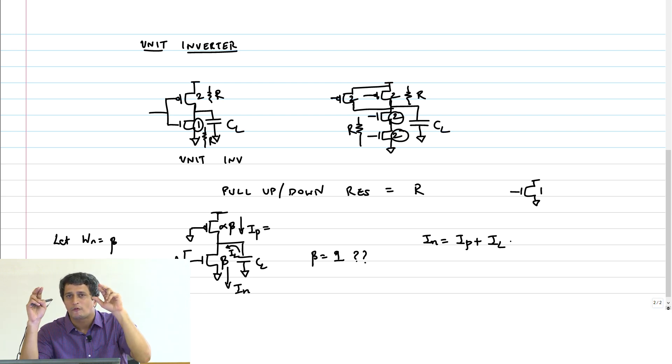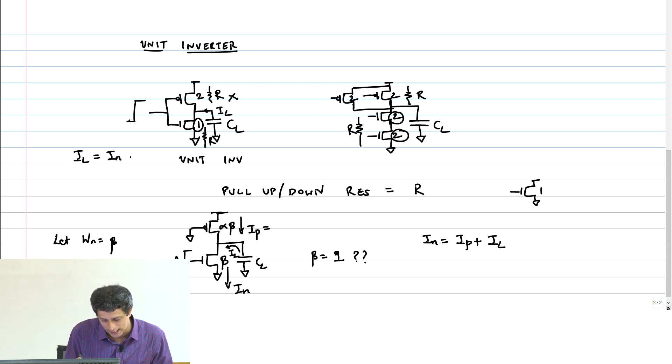So there is a leakage current coming from the PMOS transistor which is going to the NMOS as well, but that is not serving the purpose of discharging my node capacitor. Why was it OK earlier? Why were we able to talk about resistances and get away? Because if my input went instantaneously from 0 to 1, the PMOS was cut off immediately assuming instantaneous rise. It's only the NMOS that was on, and whatever current came from the load went into the NMOS transistor.